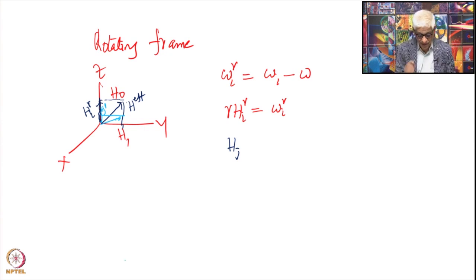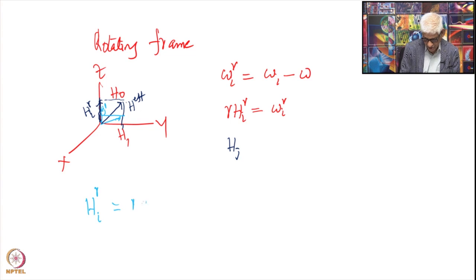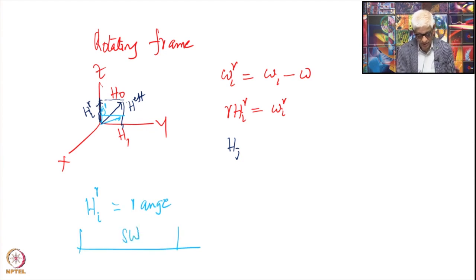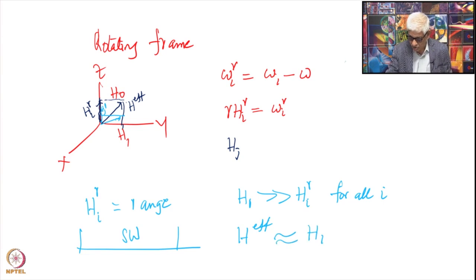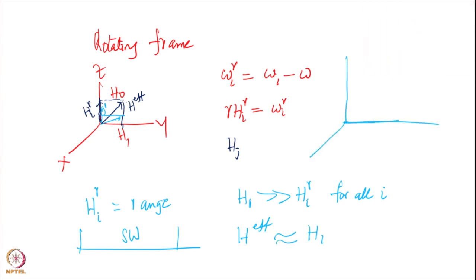If H1 is very large compared to H_i_r for all i across the entire spectral range, then the effective field will be approximately equal to H1 only, since all effective field vectors will lie nearly along the H1 axis in the transverse plane. As we increase H1, it will point more and more towards the H1 axis — therefore, the effective field for all nuclei will be H1, that is, along the x-y plane.